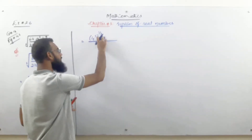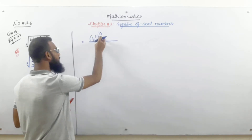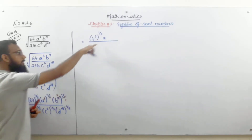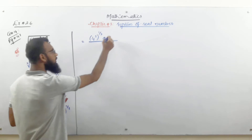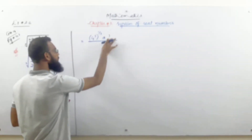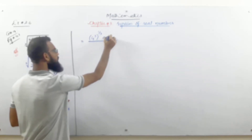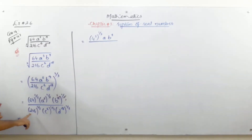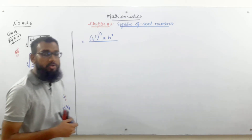The bracket resolves and the power applies. For b, the power was 9 and we apply 1/3, so 9 × (1/3) = 3, giving us b³. In the denominator, 216 with power 1/3 — 216 must be a perfect cube. 216 is the cube of 6, so 6³ whole power 1/3.